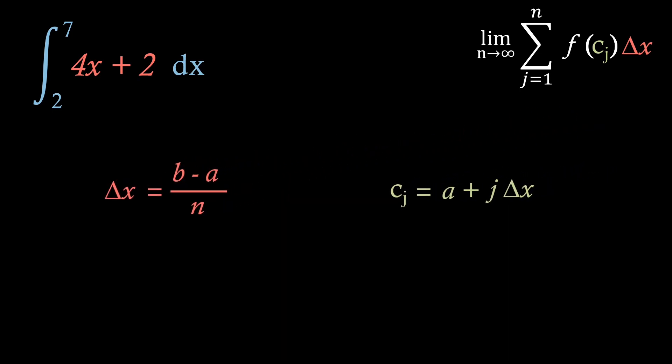So, the first thing we're going to do is figure out what our delta x and cj are. Well, the delta x will be 7 minus 2 over n, or 5 over n, and our cj will be 2 plus j times delta x. Well, that just becomes 2 plus j times 5 over n.